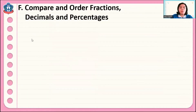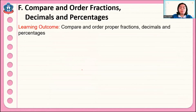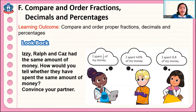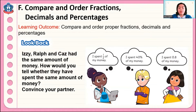The last topic: comparing and ordering fractions, decimals, and percentages. Look at this problem. Iz, Ralph, and Tez had the same amount of money. How would you tell whether they spent the same amount, or compare who spent more and who spent less? Iz spent one half of her money, Ralph spent 40 percent of his money, and Tez spent 0.8 of her money — each one represented in fractions, decimals, and percentages. So how are we going to compare this?